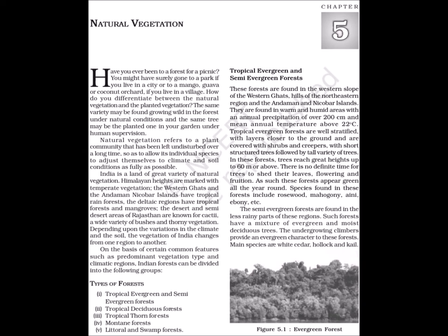Types of forests: Tropical evergreen and semi-evergreen forests, Tropical deciduous forests, Tropical thorn forests, Montane forests, and Littoral and swamp forests. Tropical evergreen and semi-evergreen forests are found in the western slope of the Western Ghats, hills of the north-eastern region and the Andaman and Nicobar Islands. They are found in warm and humid areas with an annual precipitation of over 200 cm and mean annual temperature above 22 degrees Celsius.